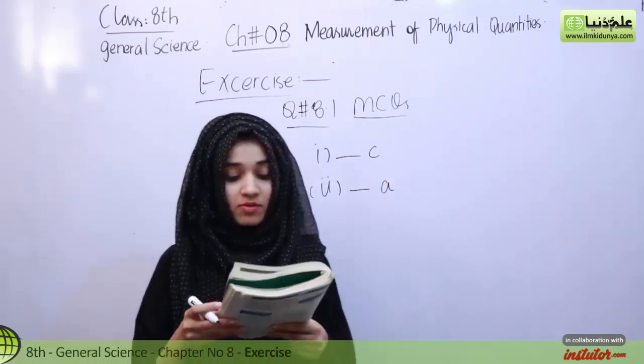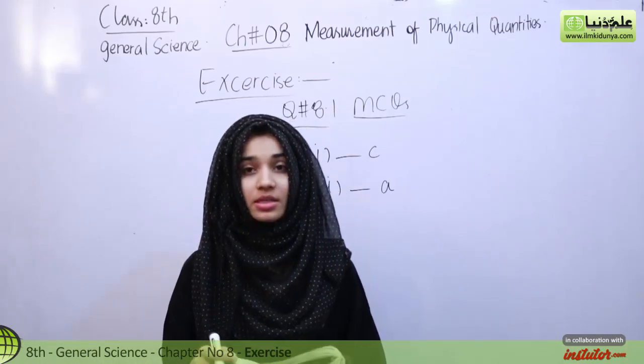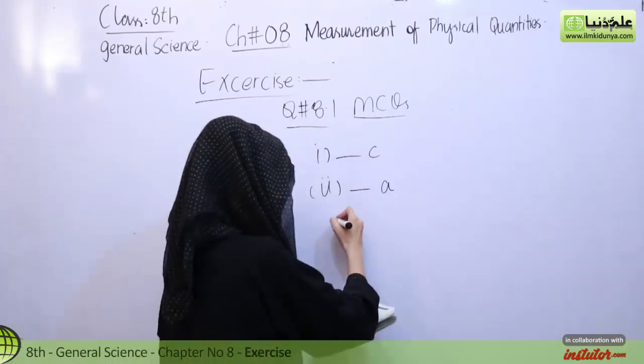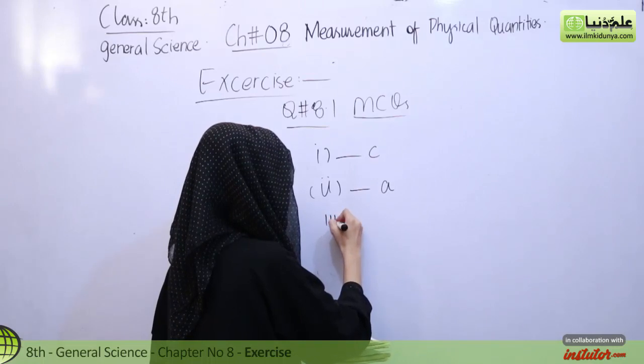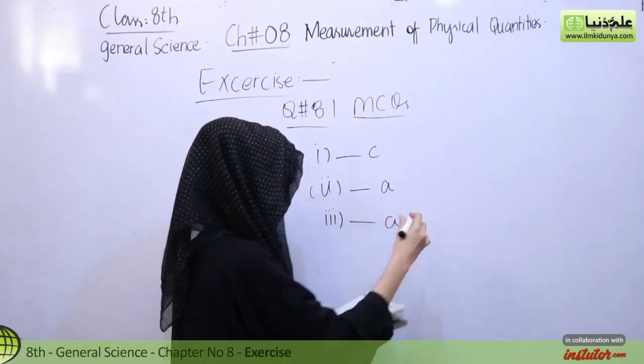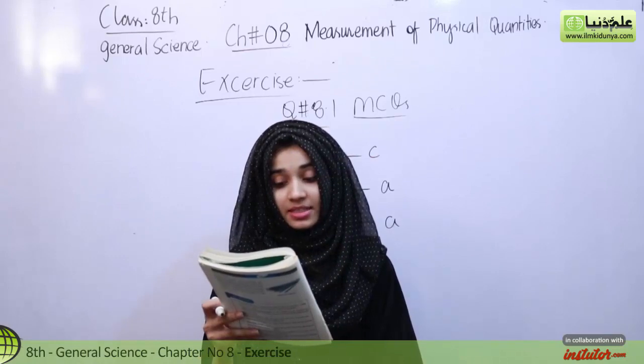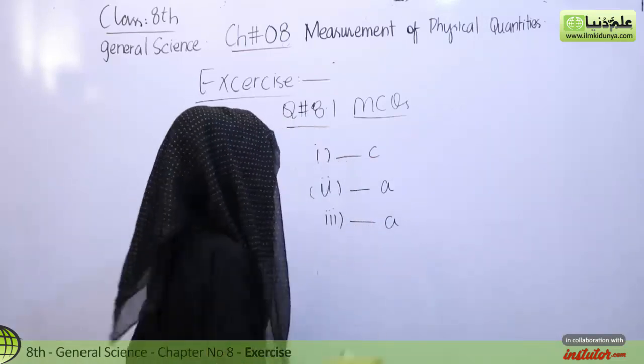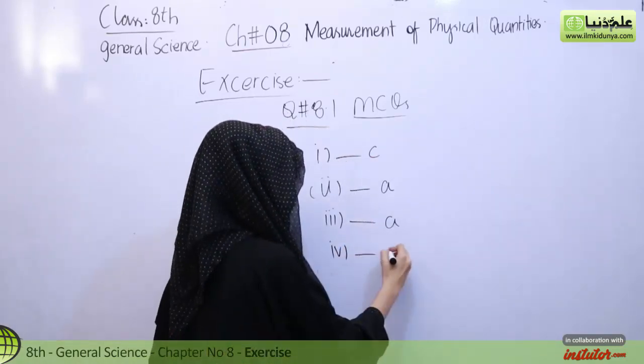Third MCQ, which of the following liquid make a meniscus opposite to the other? The correct answer is option A, that is mercury. Which of the following is a unit of volume, meter cube? The correct answer is option C.